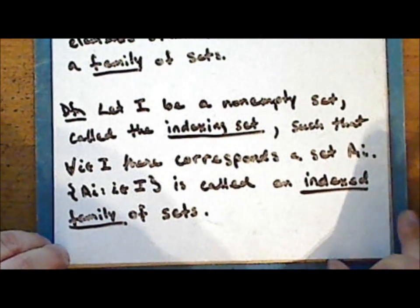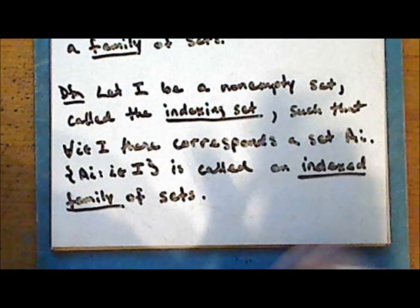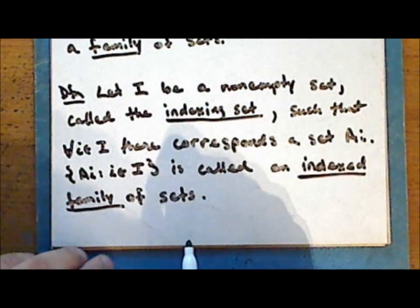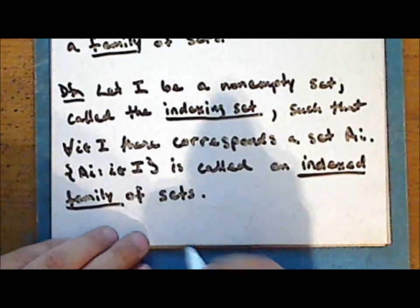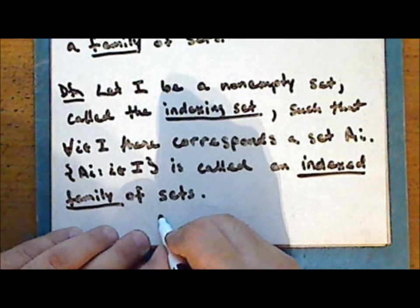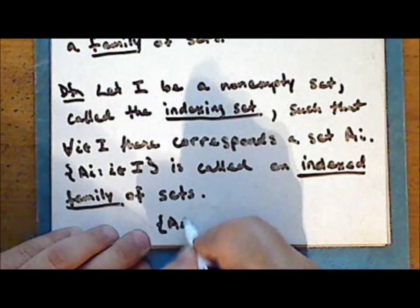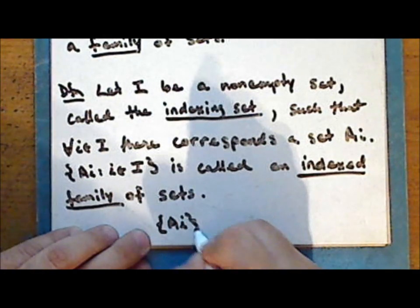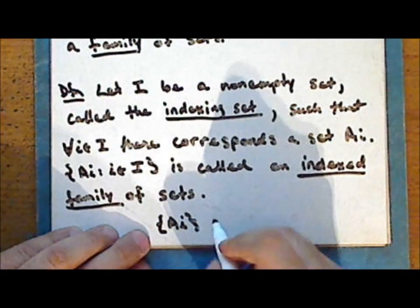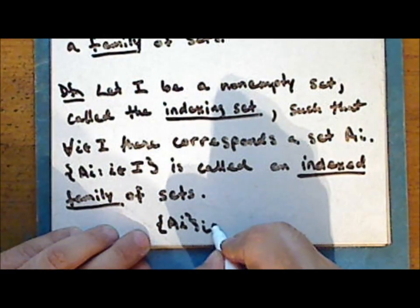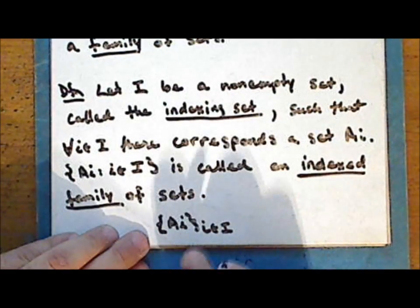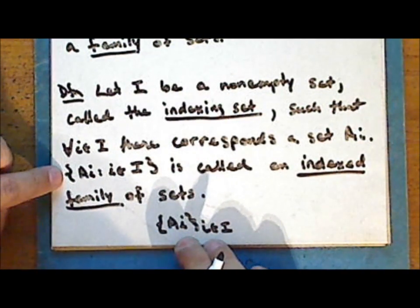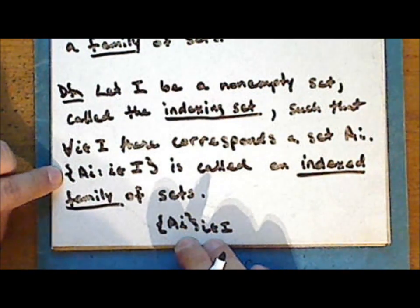Another notation that you may see for an indexed family of sets is very similar — just a variation. We show the set A sub i in braces with an underscore of i in I. Both notations mean the same thing: we have an indexed family of sets.